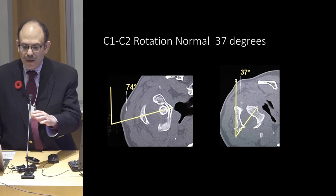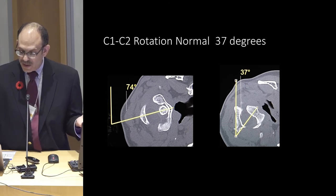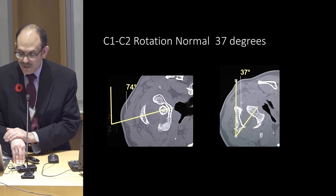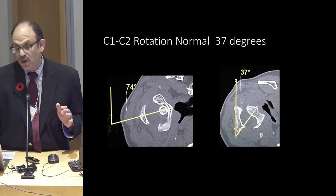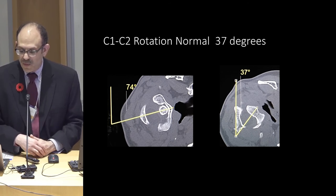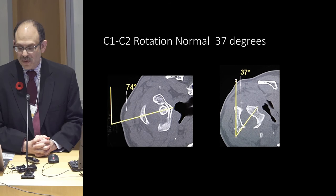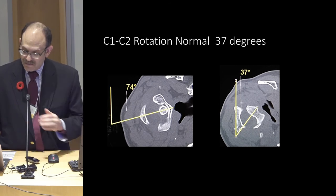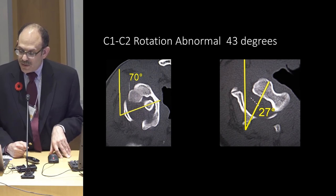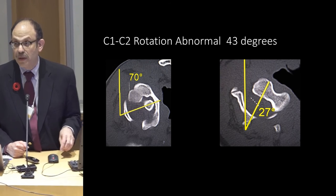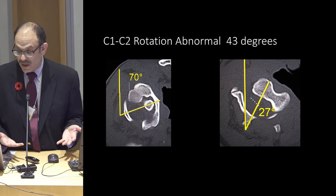We're looking for ligamentous failure of those ligaments. This person has turned their head as far to the left as possible — the top axis is C1 and the second is C2, measuring 37 degrees, which is the uppermost limit of normal. Another person has turned their head 43 degrees, which is not normal — it implies the ligaments aren't holding things together properly, suggesting instability.